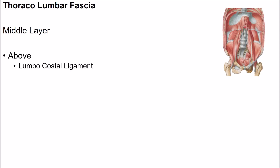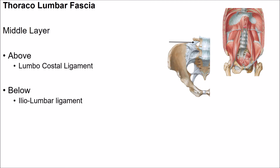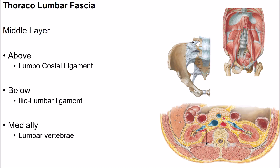The middle layer of the thoracolumbar fascia lies between the quadratus lumborum and erector spinae muscles. When traced above, the middle layer is attached to the lower border of the 12th rib, where it thickens to form the lumbocostal ligament, which is attached from the lower border of the vertebral part of the 12th rib to the transverse process of the first lumbar vertebra. Below, the middle layer is attached to the posterior part of the iliac crest, where it blends with the iliolumbar ligament. Medially, the middle layer is attached to the tip of the transverse process of the lumbar vertebrae. Laterally, the middle layer blends with the anterior layer at the lateral border of the quadratus lumborum muscle and with the posterior layer at the lateral border of the erector spinae muscle.